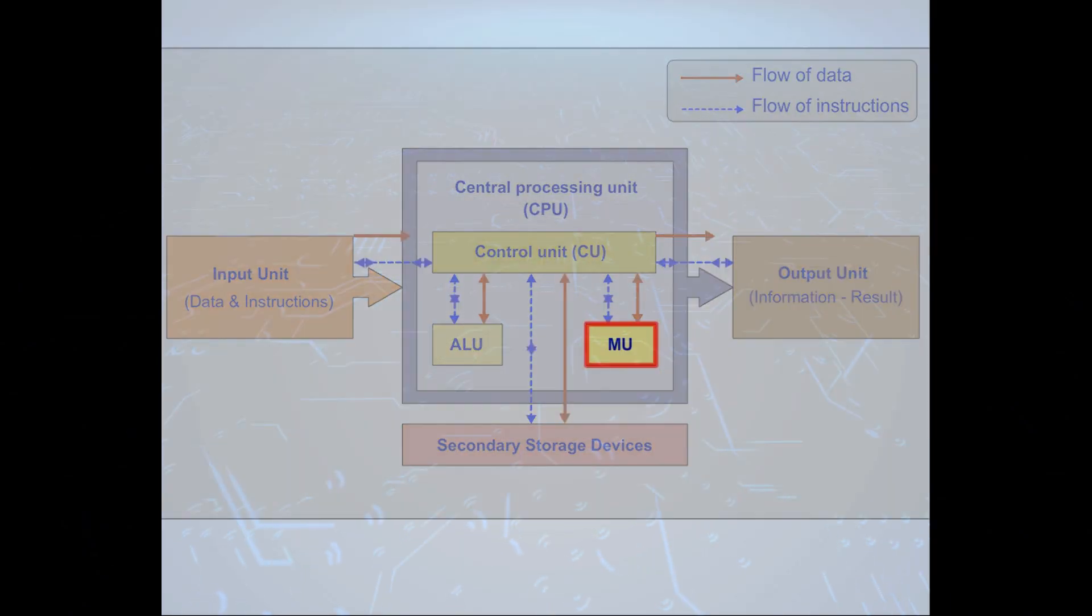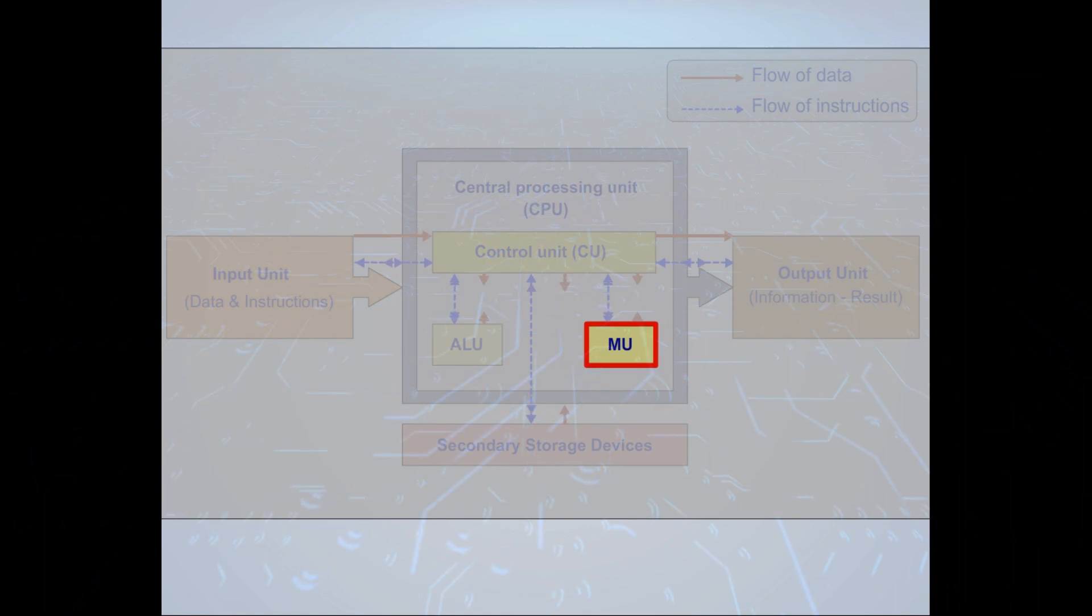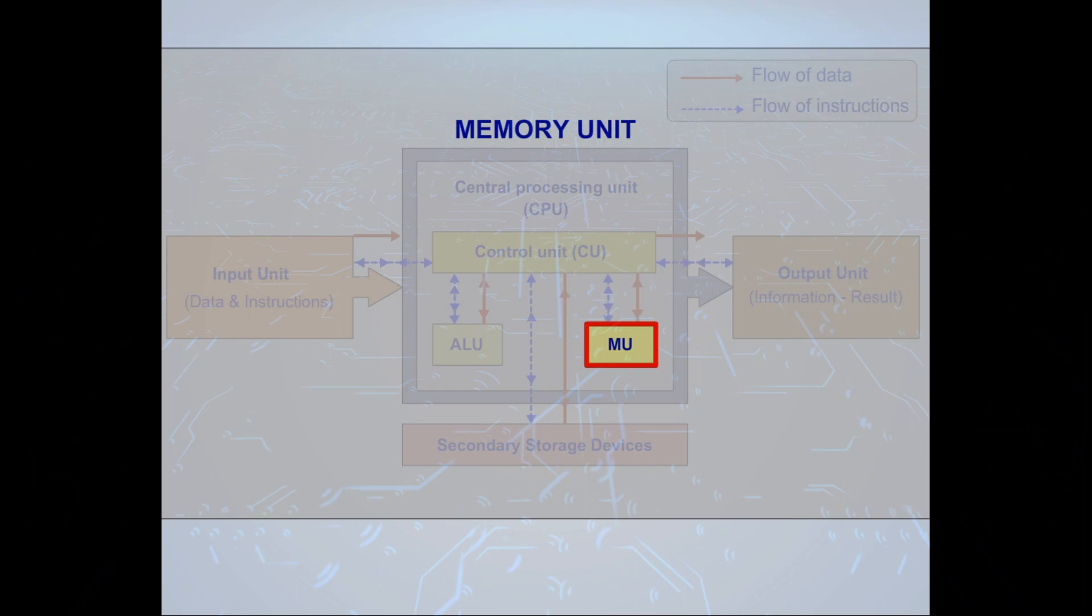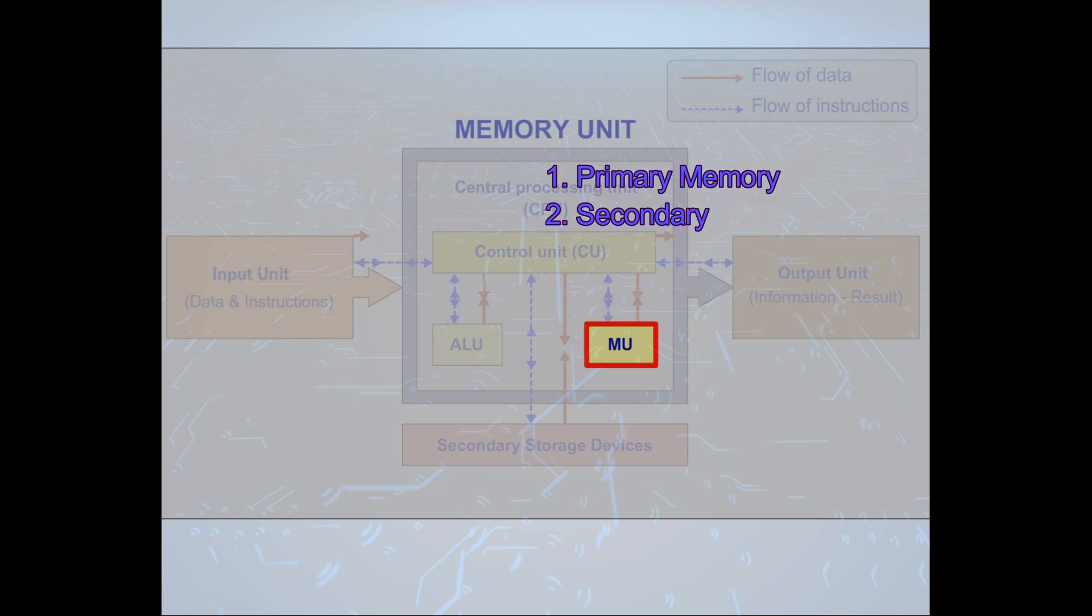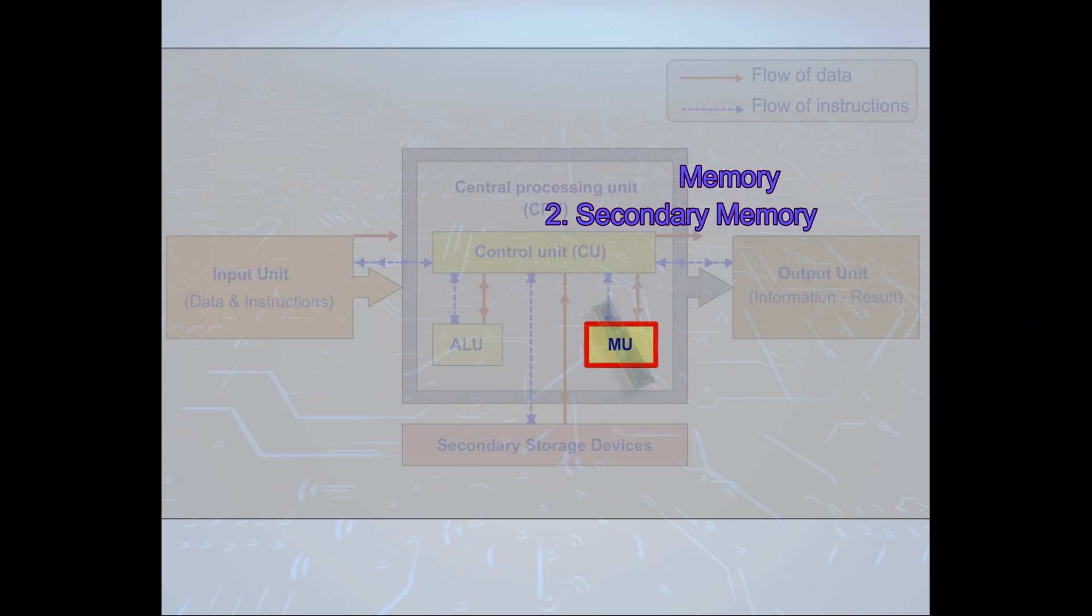The memory unit in a computer stores data and instructions that the computer needs to work with. It acts like a temporary brain of the computer system. Computers can have mainly two types of memory: primary memory and secondary memory.